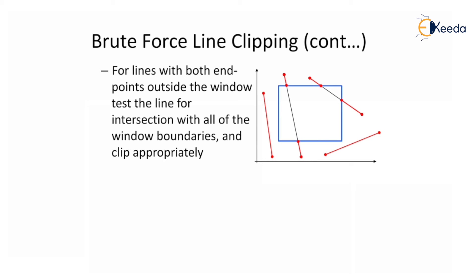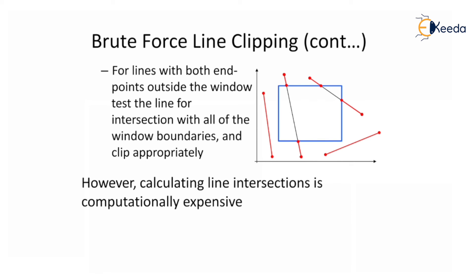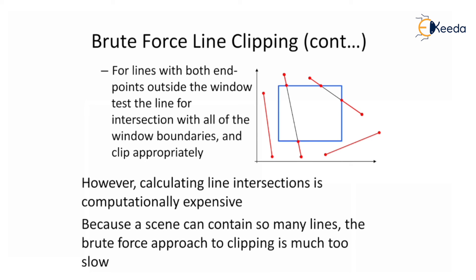For lines with both end points outside the window, test the line for intersection with all window boundaries and clip appropriately. Some of these lines are entirely outside and should be clipped; their intersection points must be calculated. This is computationally expensive, and because a scene can contain so many lines, the brute force approach to clipping is much too slow — the more lines there are, the slower it operates.